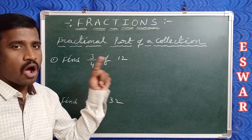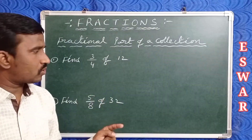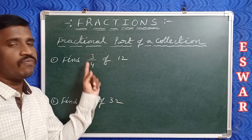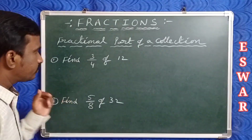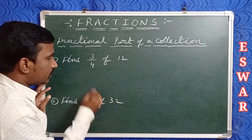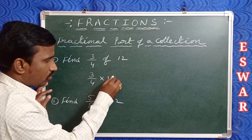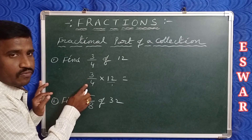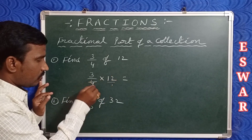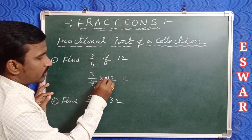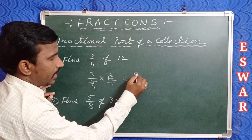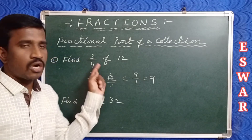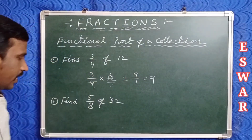The rule is: 'of' means multiplication. So three by fourth of 12 means three by four multiplied by 12. Here 12 over 1 times three over four — cancel 12 and 4: four threes are twelve, so three into three is nine. Therefore three by fourth of 12 equals nine.